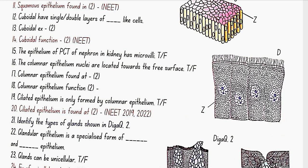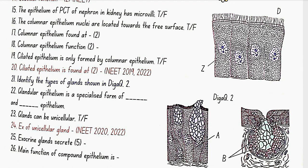The epithelium of PCT of nephron in kidney has microvilli. Yes, this is true. The columnar epithelium nuclei are located towards the free surface. No, this is false. Columnar epithelium found at stomach and intestine. Columnar epithelium function: secretion and absorption.